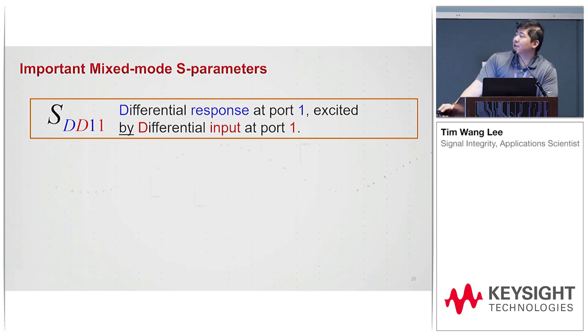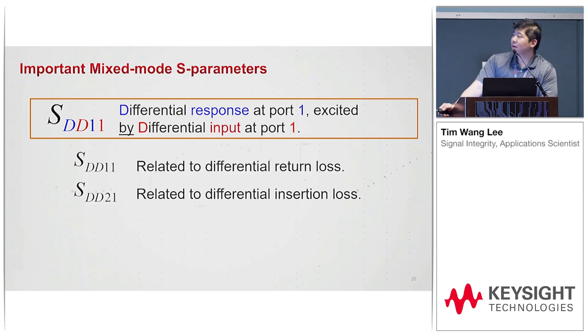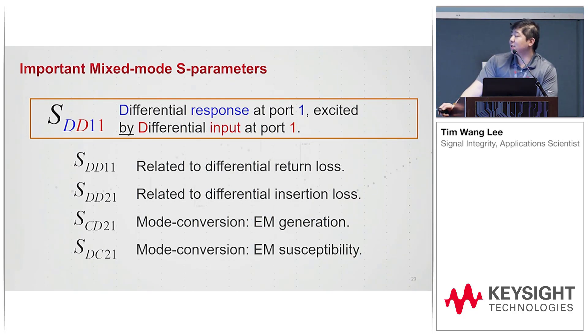Now the naming, the nomenclature is like this: we have the SDD. When we talk about SDD11, we're talking about the differential response at port 1 excited by differential input at port 1. Now the SDD11 and SDD21 are related to the differential return loss and insertion loss, while the SDC21 is talking about mode conversion, i.e., EM generation, and SDC21 is EM susceptibility.